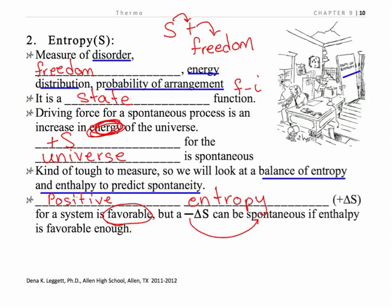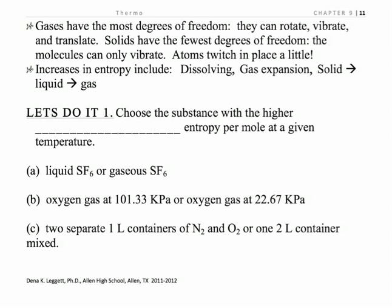We're going to have a summary chart that I think will clarify. A positive change in entropy is favorable, and a negative change in enthalpy is favorable. Now, let's look at positional entropy. Gases have the most degrees of freedom — the most ways they can be arranged and move. They can rotate, vibrate, and translate. Solids have the fewest degrees of freedom; they can barely move. A perfect crystal at zero Kelvin has zero entropy. Increases in entropy involve dissolving, gas expansion, and solids going to liquids or gases.